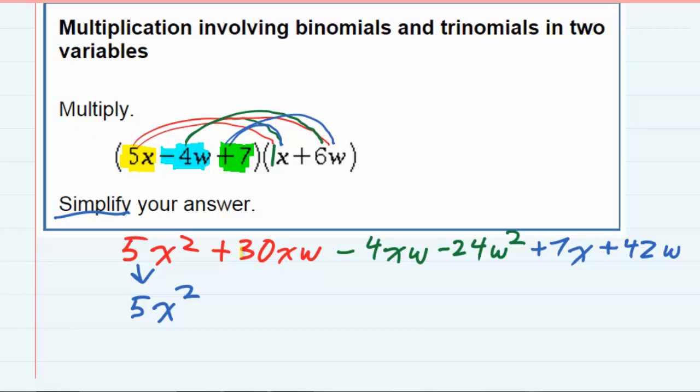But when I look at the xw terms, I see that these two are like terms, so I can combine those together. 30xw minus 4xw gives me 26xw.